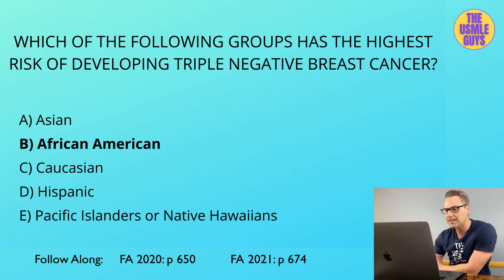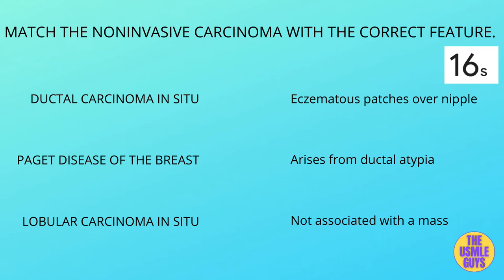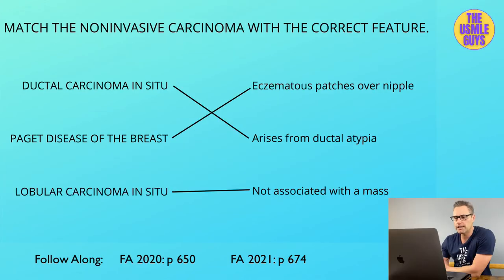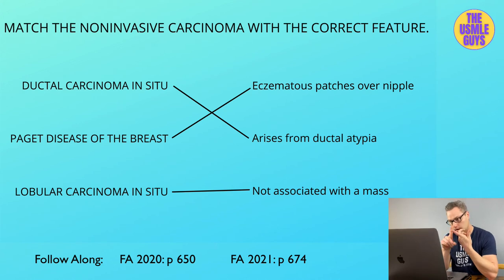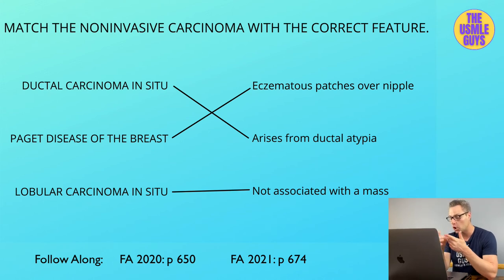Let's move on to a matching exercise for non-invasive carcinomas. Non-invasive carcinomas include ductal carcinoma in situ, Paget disease, and lobular carcinoma in situ. Ductal carcinoma in situ is a non-invasive breast cancer that fills the ductal lumen and arises from ductal atypia. Mammography often demonstrates microcalcifications early in the disease process.